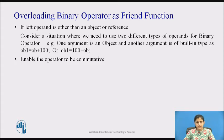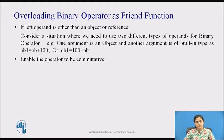Assume a class called cl that defines the member operator plus function that adds an object of the class to an integer. Given an object called ob, the expression ob + 100 is valid — ob generates the call to the overloaded plus operator function and the addition is performed. But what happens if the expression is written as 100 + ob? In this case, an integer appears on the left. Since an integer is a built-in type, no operation between an integer and object ob is defined. Therefore, the compiler will not compile this expression.